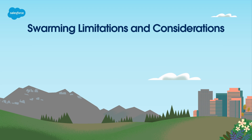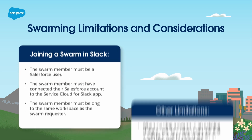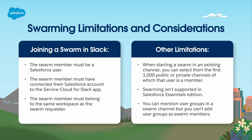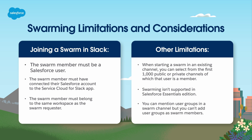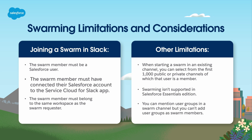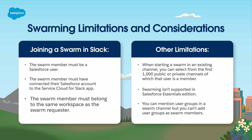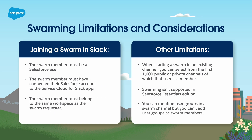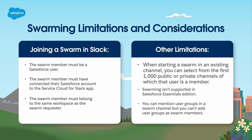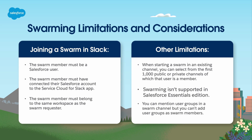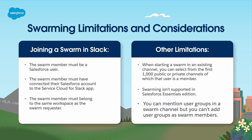Before starting with swarming, it's good to have a full picture of its capabilities. Here are a few key limitations to consider. To let users join a swarm in Slack, the swarm member must be a Salesforce user, must have connected their Salesforce account to the Service Cloud for Slack app, and must belong to the same workspace as the swarm requester. Other limitations: when starting a swarm in an existing channel, you can select from the first 1,000 public or private channels of which that user is a member. Swarming isn't supported in Salesforce Essentials Edition. You can mention user groups in a swarm channel, but you can't add user groups as swarm members.